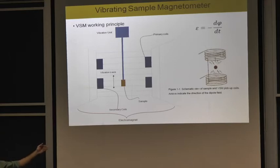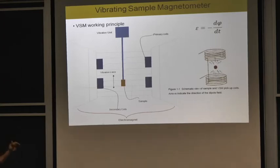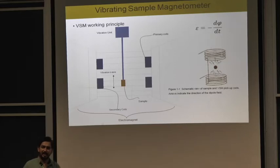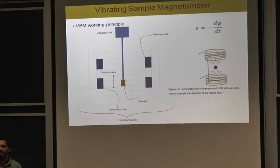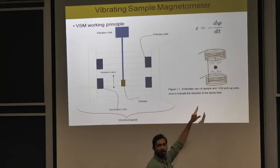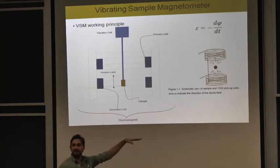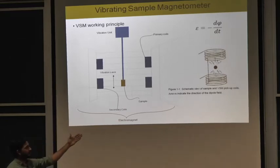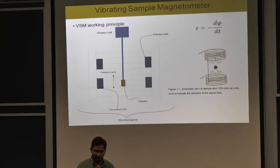When you put a sample inside this magnetic field, the sample gets magnetized. When it gets magnetized, it will have its own magnetic field — also known as the magnetic stray field. We then allow the sample to move vertically inside this magnetic field. When this happens, there is a changing magnetic field of the sample, which produces an induced EMF in the sensing coil. As you can see in the figure, here is the dipolar field of the sample — when it vibrates, it induces an EMF according to Faraday's law. This EMF is fed to the lock-in amplifier and we get the magnetization.